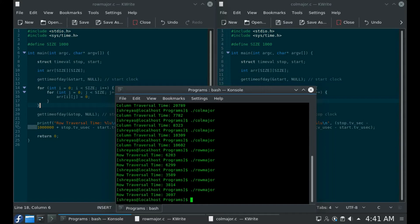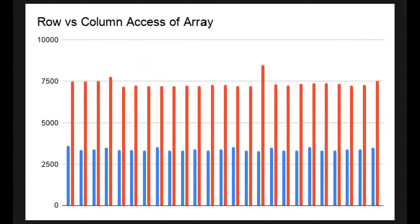So as you can see there's a huge difference between accessing by the row versus accessing by the column. I ran the programs twenty-five times — both of them alternately — and recorded the times. The blue ones are when I access by the row, the red ones are when I access by the column. Running these statistics, I'm getting more than twice the time for column-wise access — the exact value was about 2.1 times.